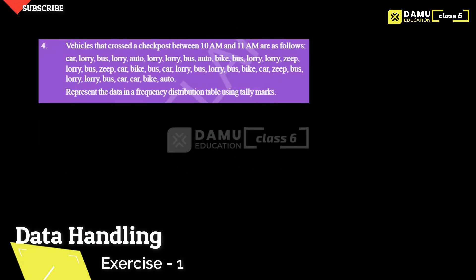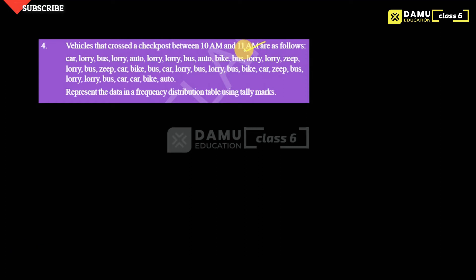Hello viewers, thanks for watching our videos. Please subscribe and click the bell icon. In this module, we are going to discuss the fourth question: vehicles that crossed a checkpost between 10 AM and 11 AM. Car, lorry, and bus — different types of vehicles are given. We need to represent the data in a frequency distribution table using tally marks.